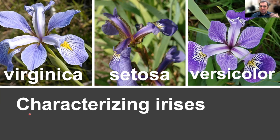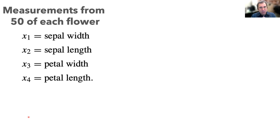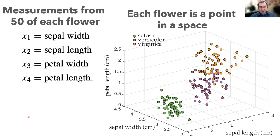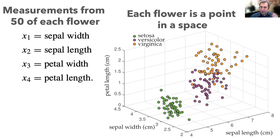This is a way of trying to see, from morphological measurements, if the species separated out. There were measurements from 50 of each type of flower — let's call those x1, x2, x3, x4. We can't easily plot in four-dimensional space, but we can do a 3D plot. If we plot sepal width, sepal length, and petal length, and color-code by flower species, the setosa nicely separates out. You could say with high confidence: these measurements mean this must be a setosa iris.